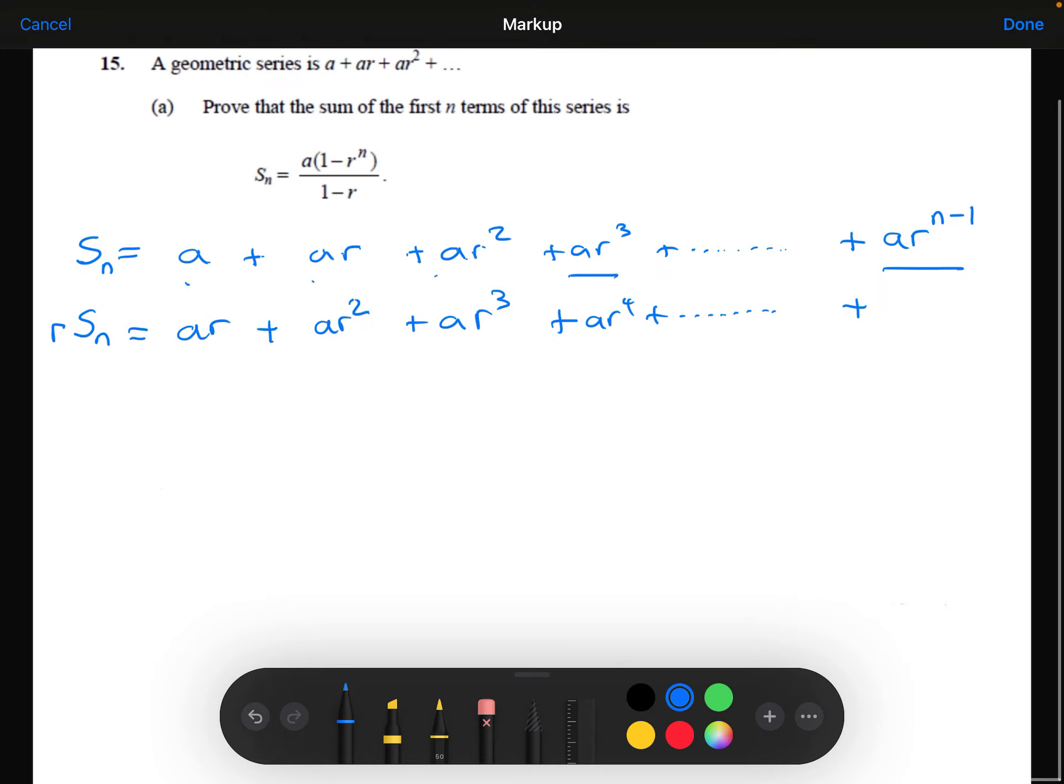AR squared times R is going to be AR squared. The power of n is going to be AR to the power of n. Now, underneath here, I am going to do the top line take away the bottom line. I'm going to do S_n minus R times S_n.